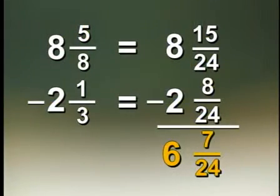Can we reduce 7 24ths? Well, 7 is not divisible by 2 or by 3 or by 5. It is divisible by 7, but 24 is not divisible by 7, so we cannot reduce this fraction. The answer is 6 and 7 24ths.